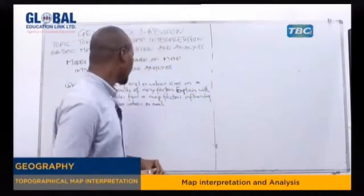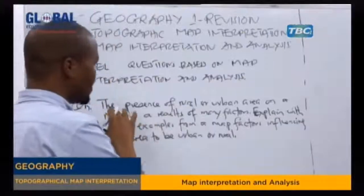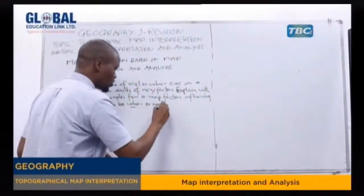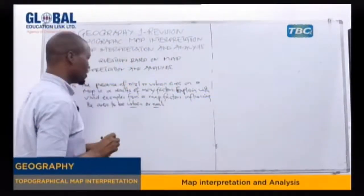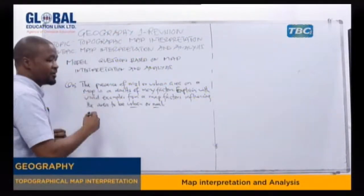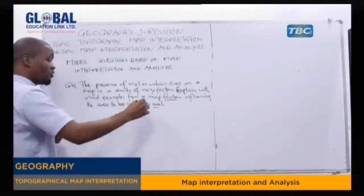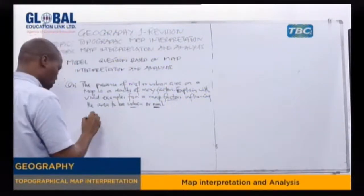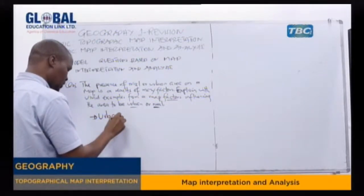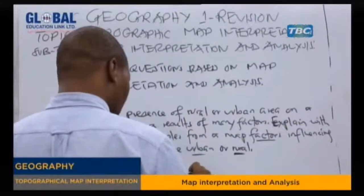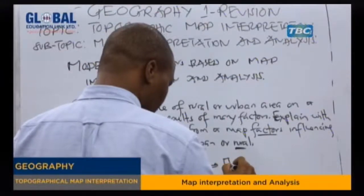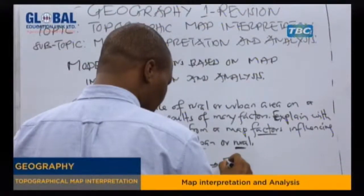Let's see the fourth question right here. It requires us to explain the factors that influence an area to be urban or rural. So, how is an urban or rural area seen on a map? An urban area on a map can be represented by dots mixed with very small rectangles or squares.